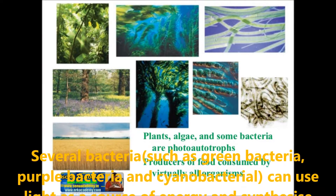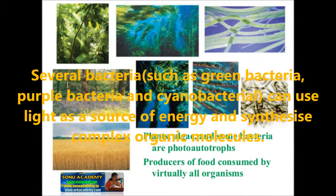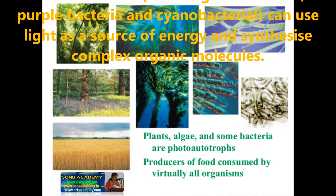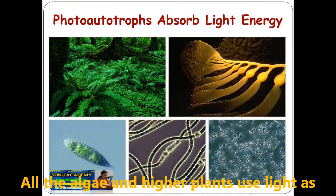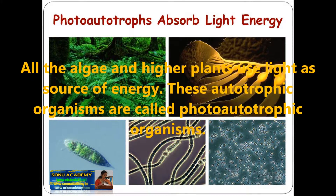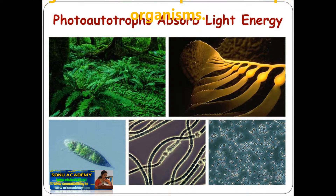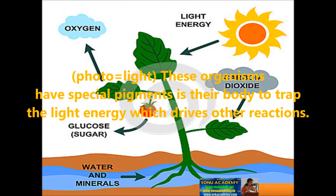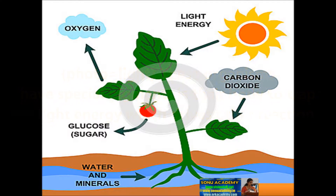Photoautotrophic organisms: several bacteria such as green bacteria, purple bacteria, and cyanobacteria can use light as a source of energy and synthesize complex organic molecules. Similarly, all the algae and higher plants use light as a source of energy. These autotrophic organisms are also called photoautotrophic organisms. Here, 'photo' means light. These organisms have a special pigment in their body to trap the light energy, which drives the other reactions.